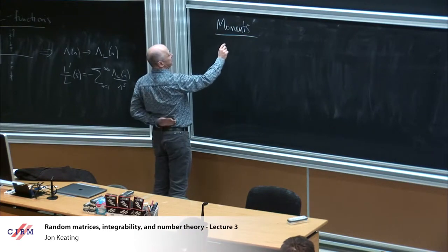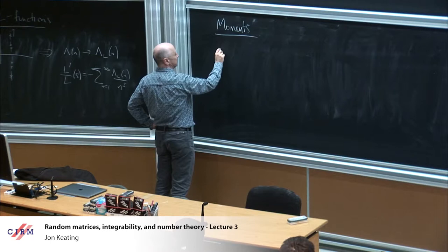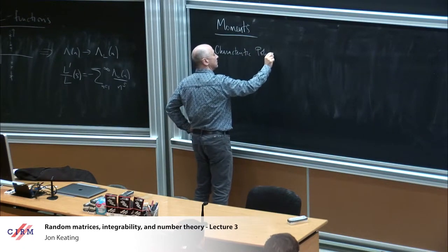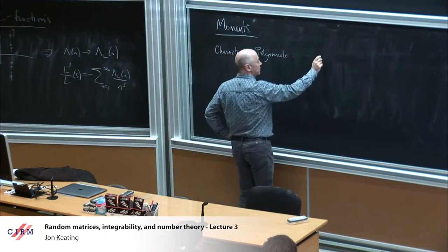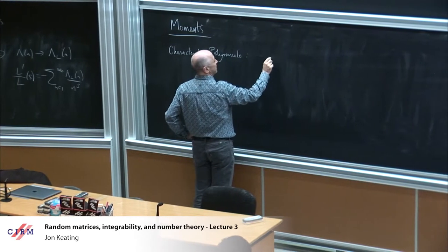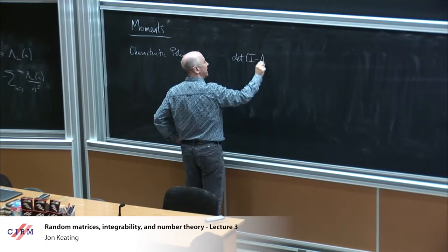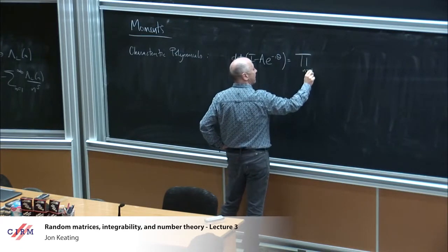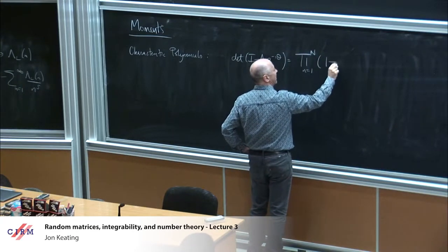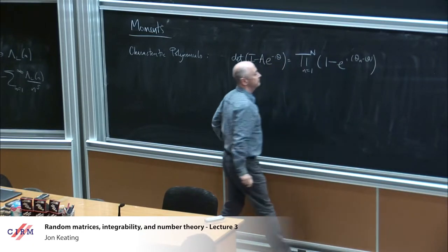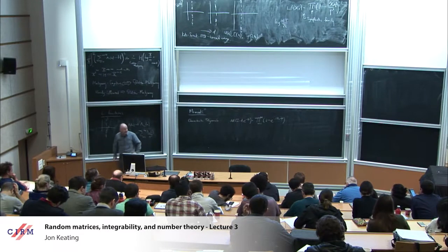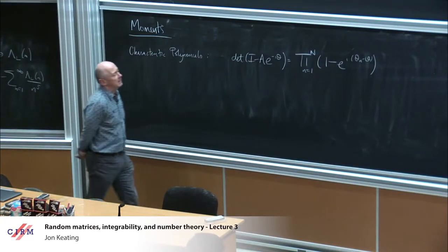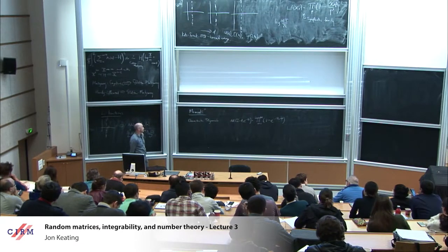In random matrix theory, the analog of this would be to look at the characteristic polynomial. I get my unitary matrix A, back in the unitary group, and form the characteristic polynomial: determinant of (I − A·e^{−iθ}), which is the product over eigenvalues of (1 − e^{i(θ_n − θ)}). You can think of this as the analog of a zeta function in that it has zeros. The zeros of this function are the eigenphases of the matrix A — it's a function with interesting zeros just like the Riemann zeta function.